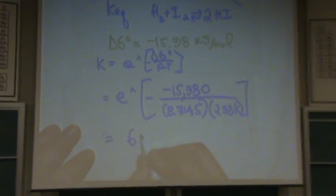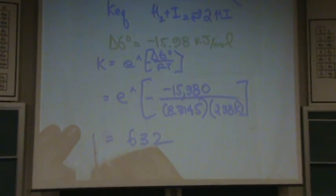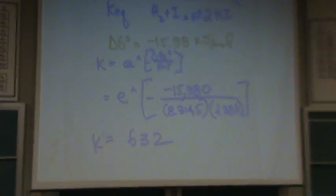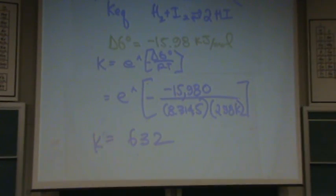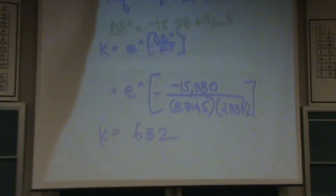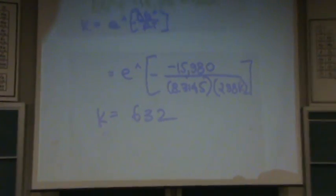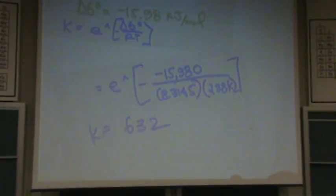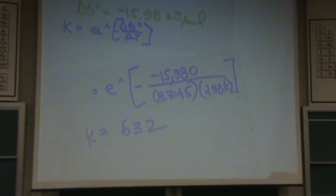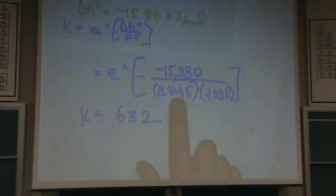This is going to equal 632. That's definitely spontaneous. What's favored here, products or reactants? Products. Spontaneous means same thing as products are favored. Any questions? We'll move on to the next topic. This is given on the back of the exam. I suppose the lambda as well.